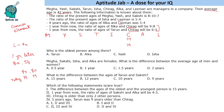One year from now, ratio of ages of Alka and Chirag is 9:8. So if Chirag is 40 one year later, Alka is 45 one year later, meaning Alka's present age is 44. And since Tarun and Chirag are in ratio 6:5, Tarun one year later is 48, so Tarun's present age is 47. For the second case, if Chirag is 80 one year later, Alka's age would be 90 and Tarun's would be 96, making their present ages 89 and 95 respectively.